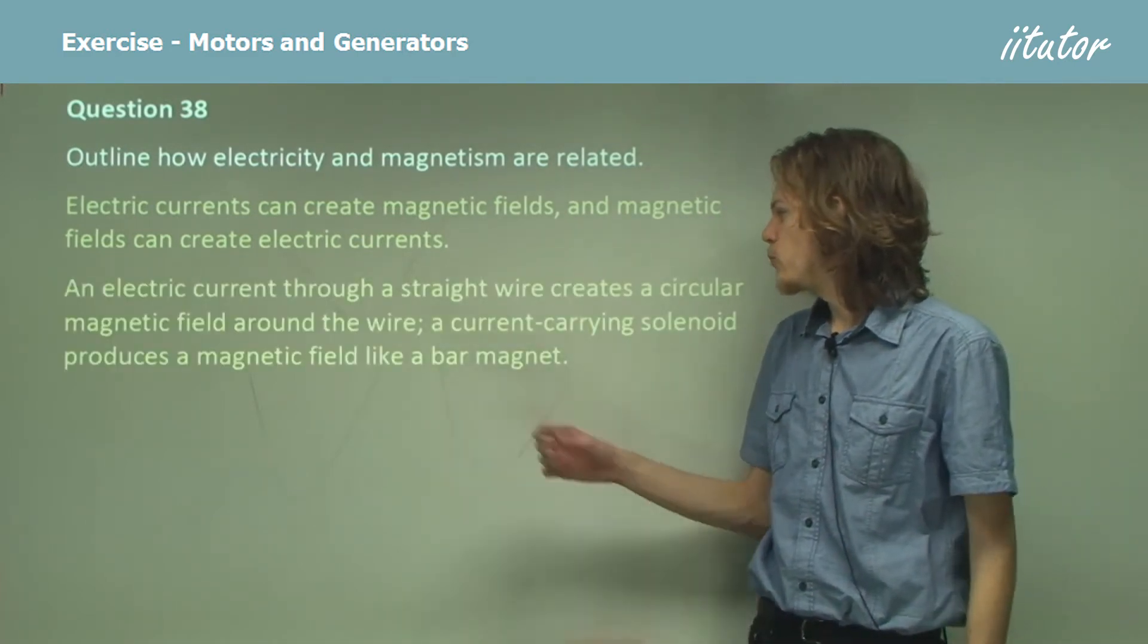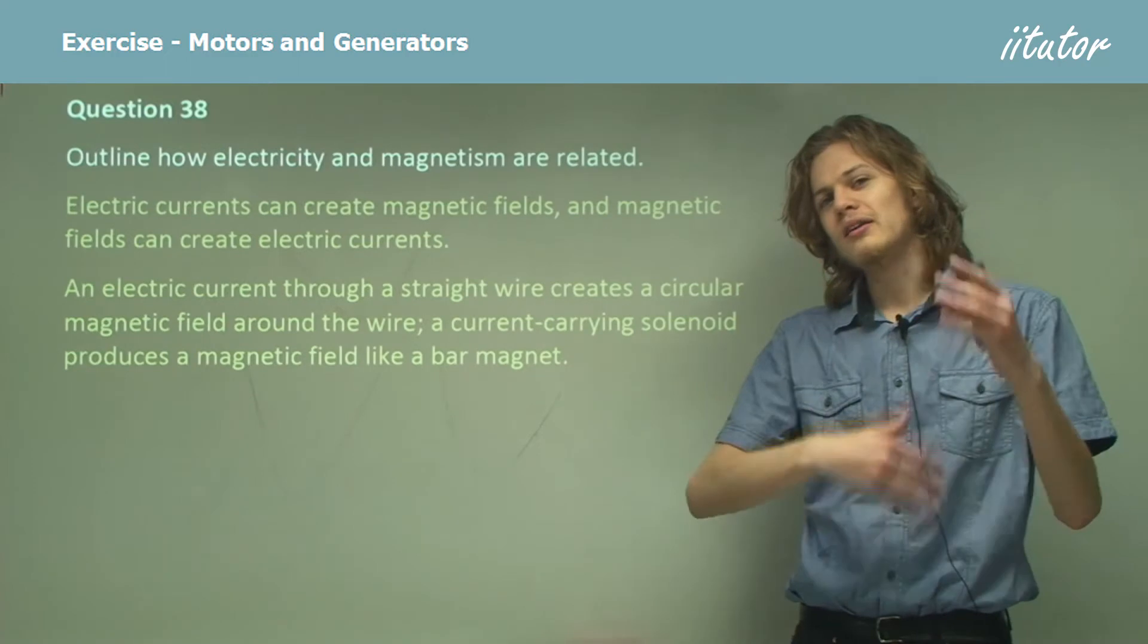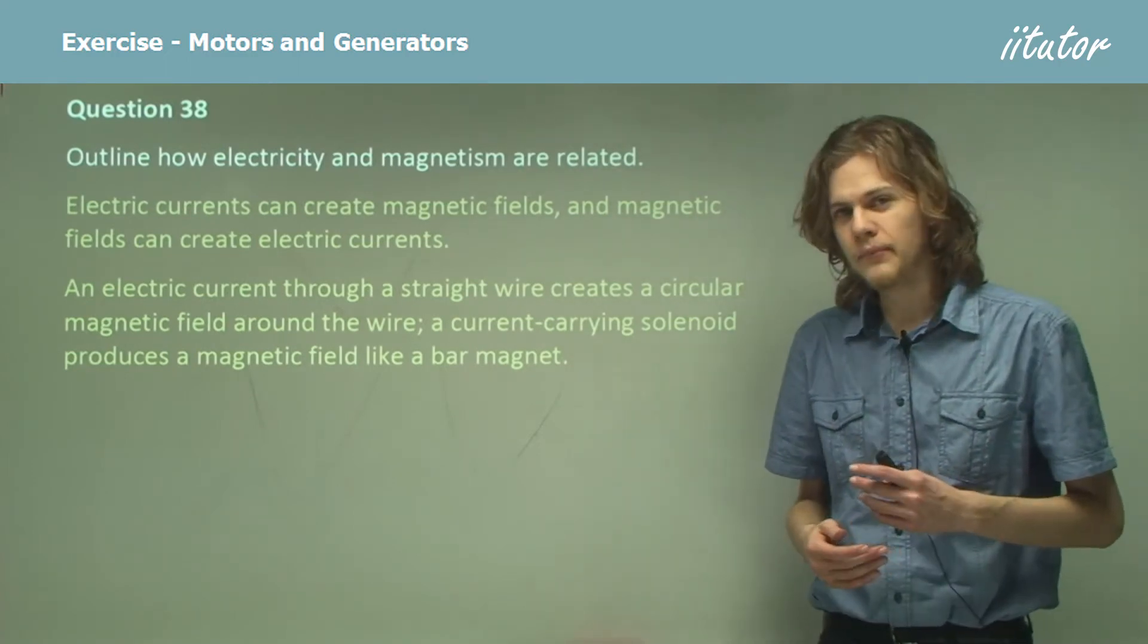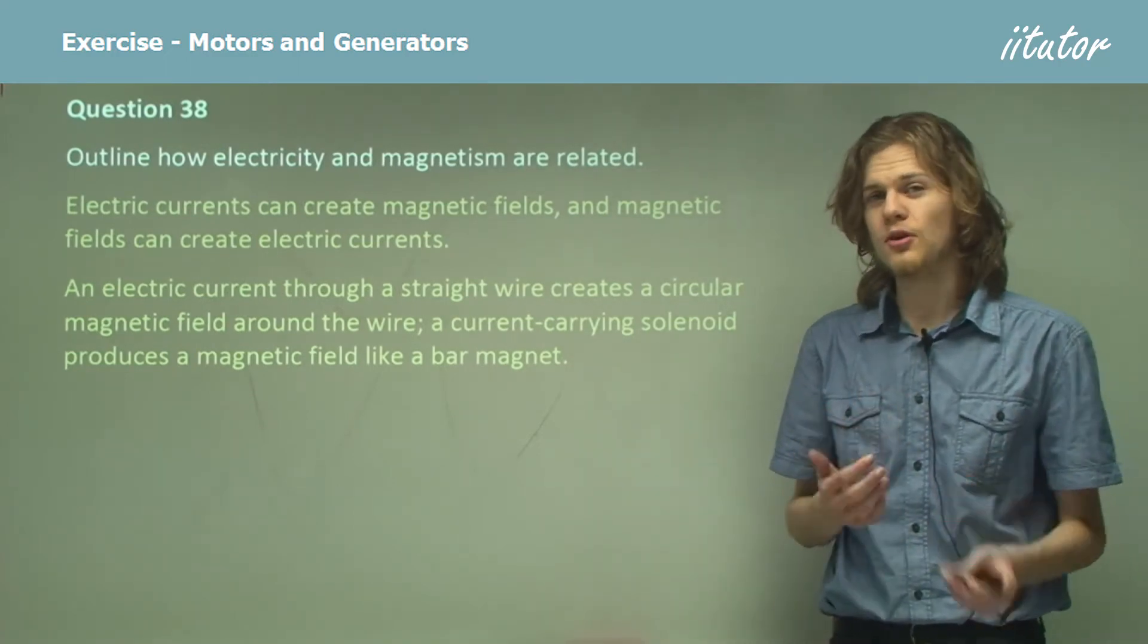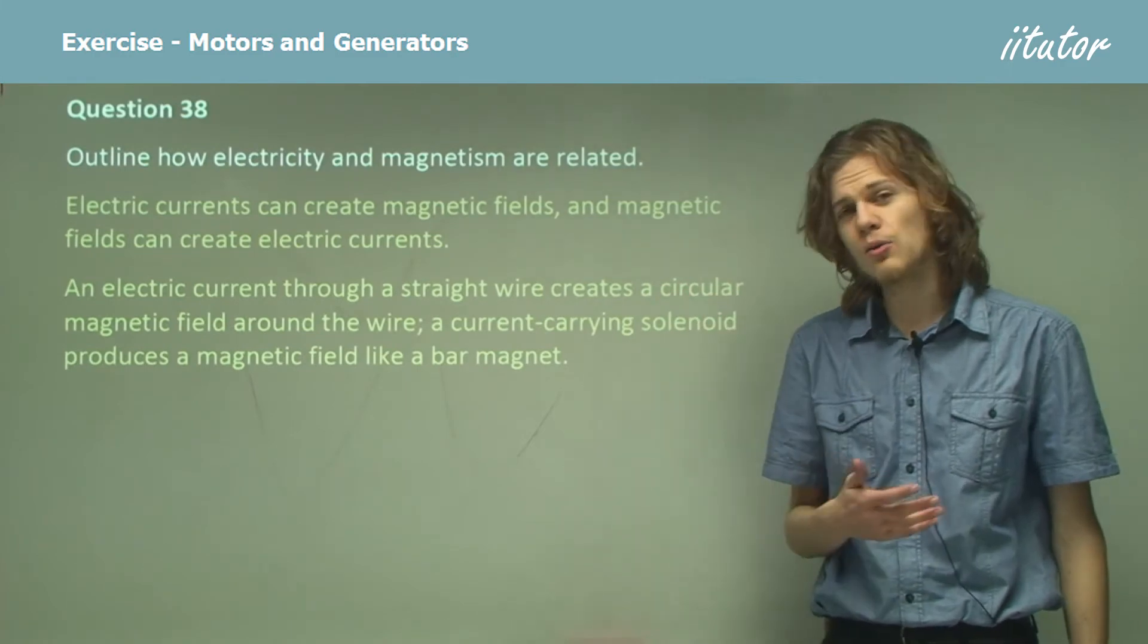An electric current through a straight wire creates a circular magnetic field around that wire. You can test this by putting compasses around a wire that has a current flowing in it.